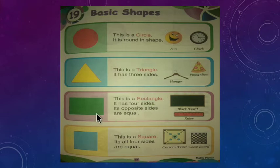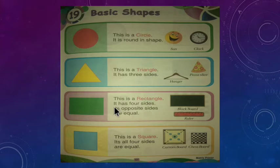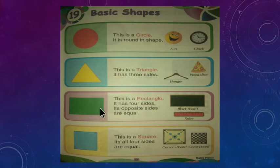See the next shape. Which shape is it? This is a rectangle. It has four sides. Let's count: one, two, three, and four.